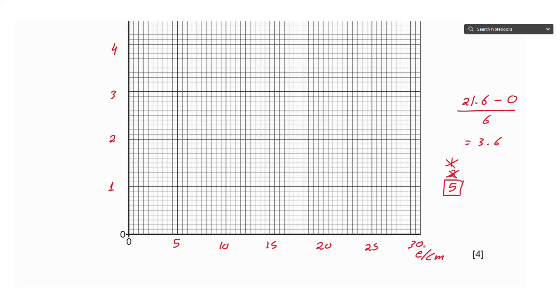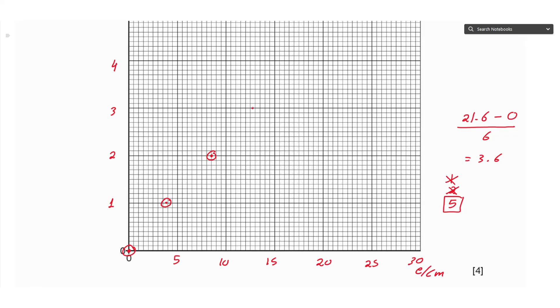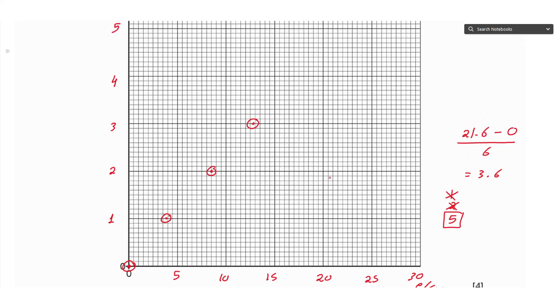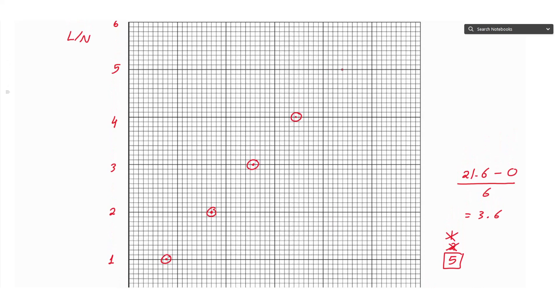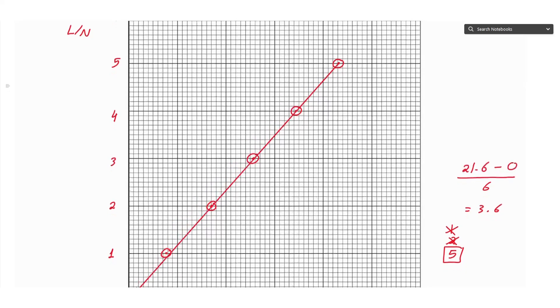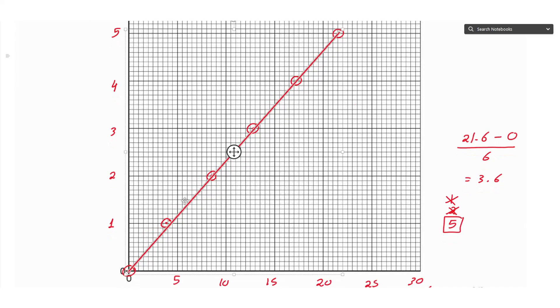Now we plot the points. The first point was at zero and zero, so we have a dot here. Next we have 1 Newton with 3.9, so this is almost 4. Next we have 2 and 8.5. Next we have 3 and 12.8—that's just before 13. Next we have 4 with 17.2, just after 17. Last point is 5 and 21.6, just after 21.5. We try connecting the first and last points to see if it goes as a best fit line. We can leave it as it is—only one point is out of the line.